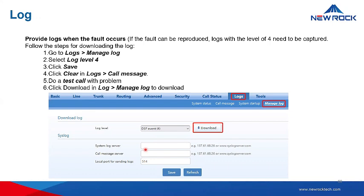So make sure you need to give us the correct call scenario, the details, and of course together with this log. So how to get a log: go to Logs, Manage Log, then set log level 4. Then on the Log Call Message, you need to clear any messages there.